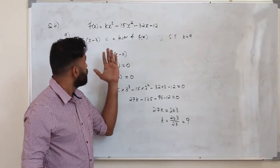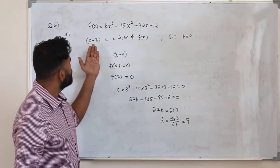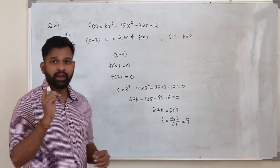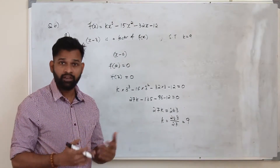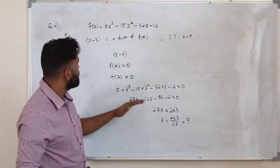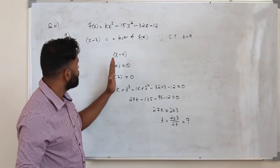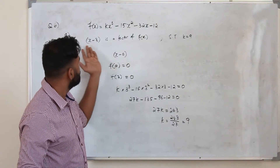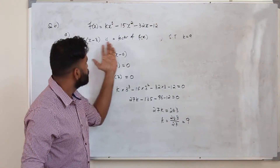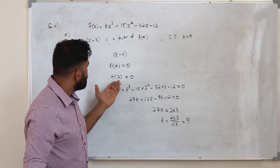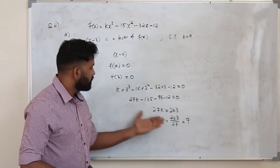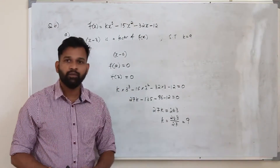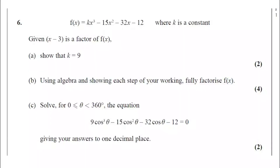You need to know the factor theorem and the remainder theorem. In this case we do not apply the remainder theorem — we use the factor theorem and set f of 3 equal to 0, which lets us find the value of k directly.